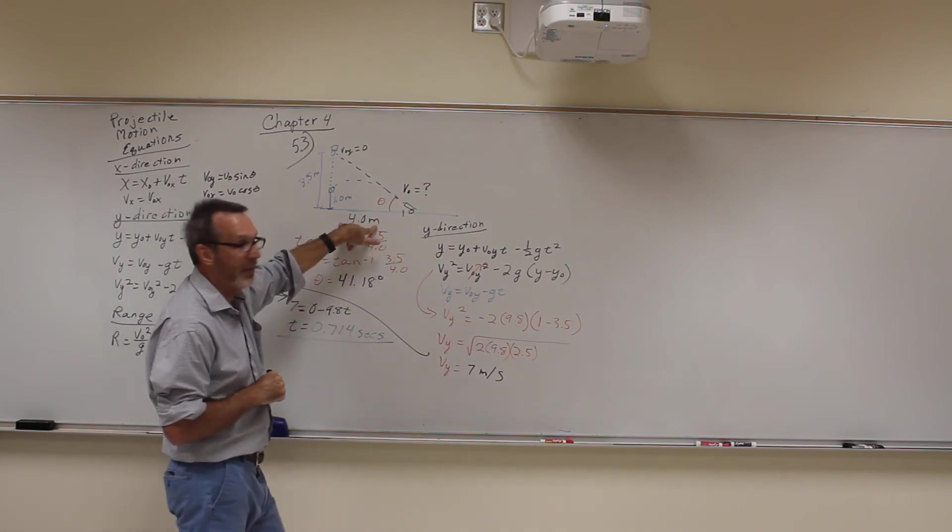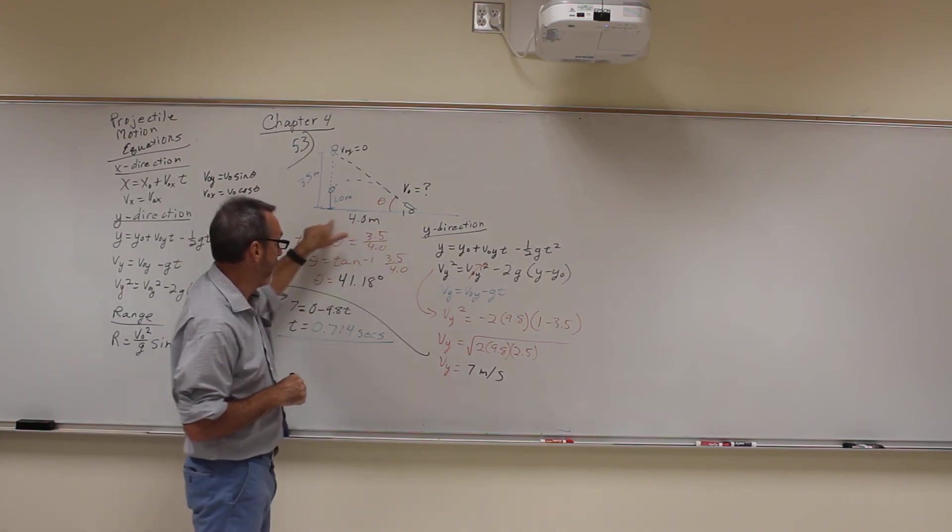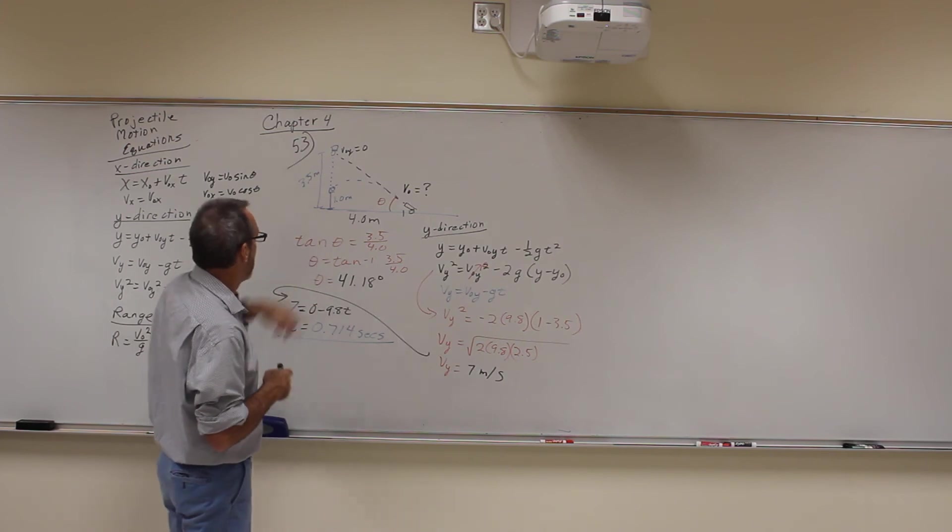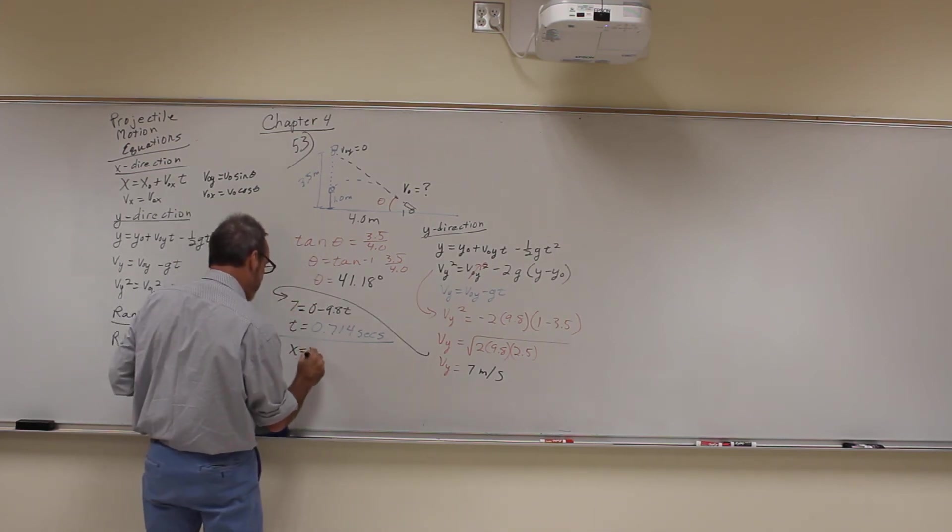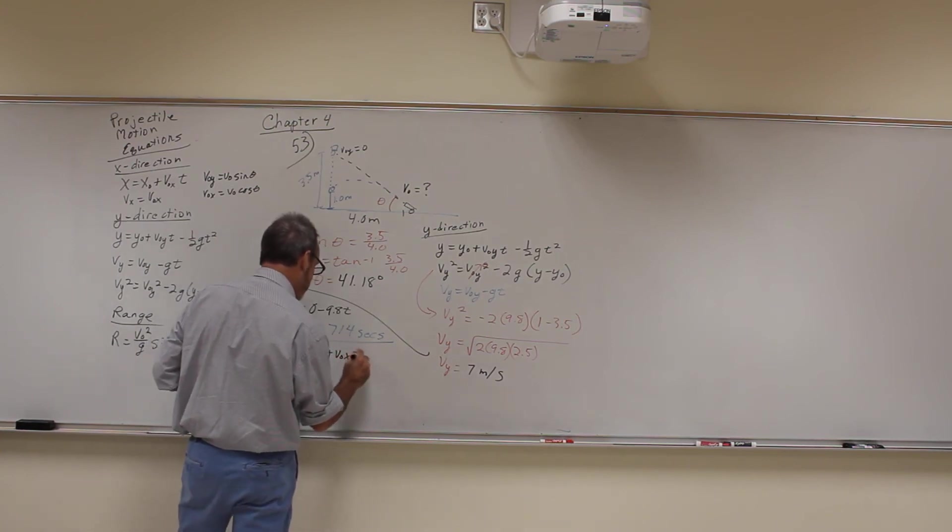Well, the easiest thing now is to use the x direction because we know exactly how far the range is, right? And so what we're going to do is we're going to use x equals x naught plus V naught X T.